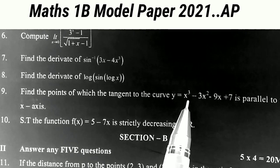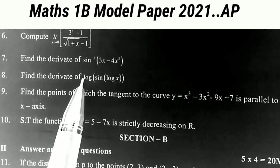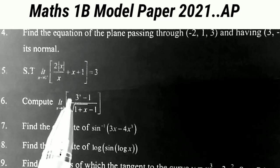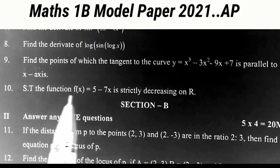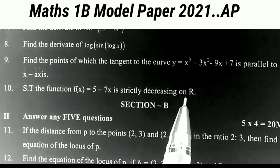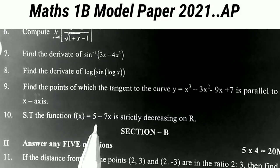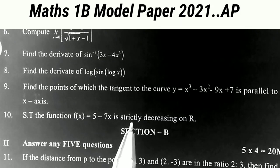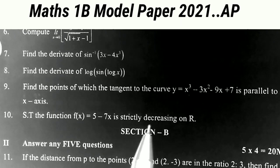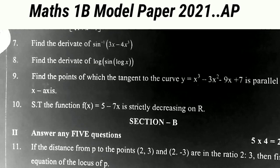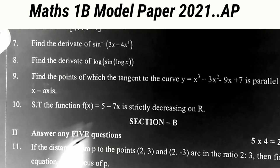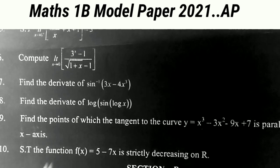Those two marks questions cover tangent and normal, differentiation, and limits and continuity. The last one: show that the function f(x) = 5 minus 7x is strictly decreasing on R. This year, one two-mark sum has been added from the increasing and decreasing topic, so students who want to get 75 marks must prepare the concept of increasing and decreasing. These are all the two-mark problems.